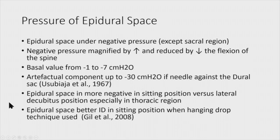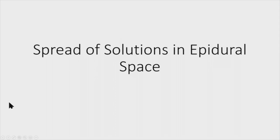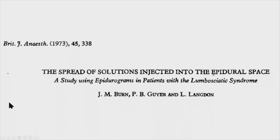The negative pressure is magnified when the patient is flexed and reduced when they aren't. The basal value is negative 1 to negative 7 centimeters of mercury, and it can actually go up if you stick the needle against the dura. The epidural space is more negative in the sitting position versus the lateral decubitus position, especially in the thoracic region. Some people feel you can identify the epidural space better with the patient sitting with feet hanging down.